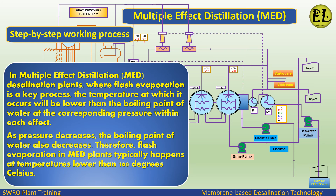In Multiple Effect Distillation (MED) desalination plants, where flash evaporation is a key process, the temperature at which it occurs will be lower than the boiling point of water at the corresponding pressure within each effect. As pressure decreases, the boiling point of water also decreases. Therefore, flash evaporation in MED plants typically happens at temperatures lower than 100 degrees Celsius.